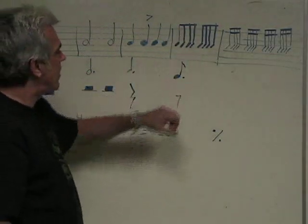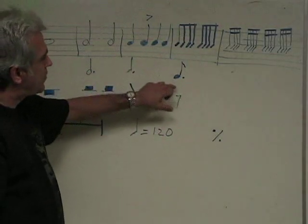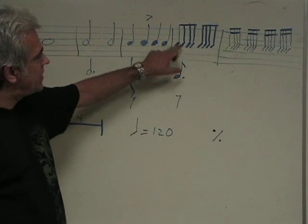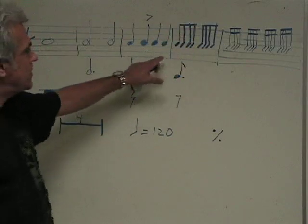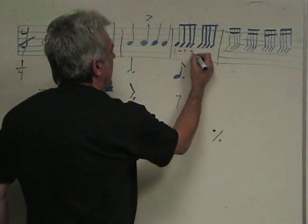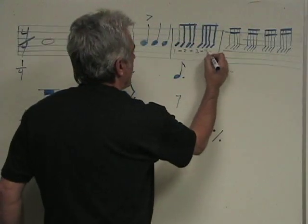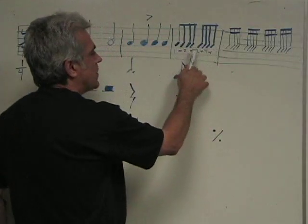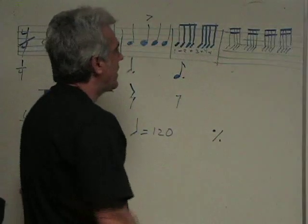And eighth notes have one bar. And if they're written singly, they'll look like this. But when they're written together, usually they're just a horizontal bar tying them together. So here we have one and two and three and four and, one and two and three and four and.